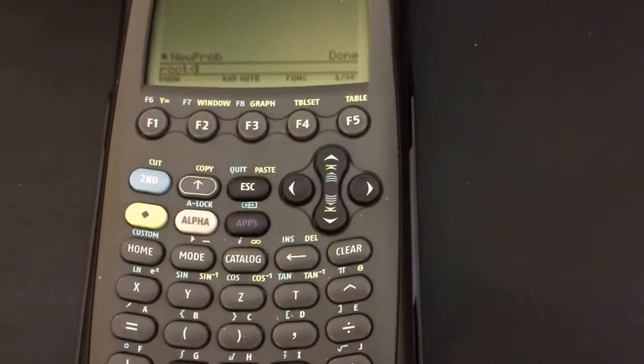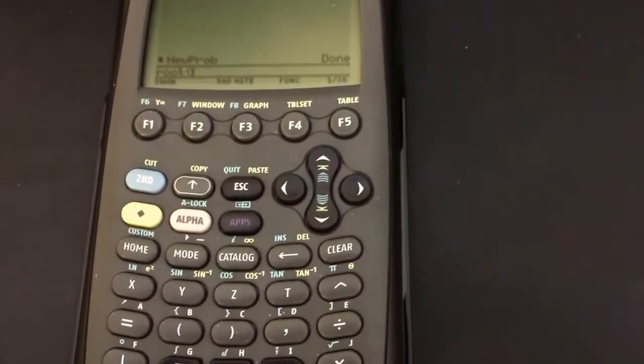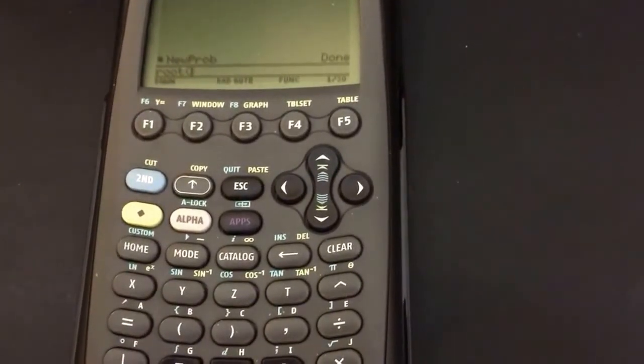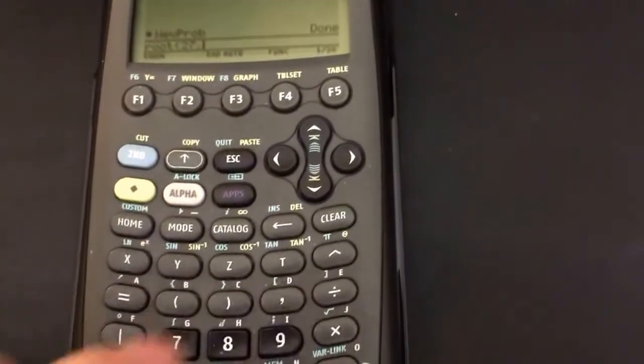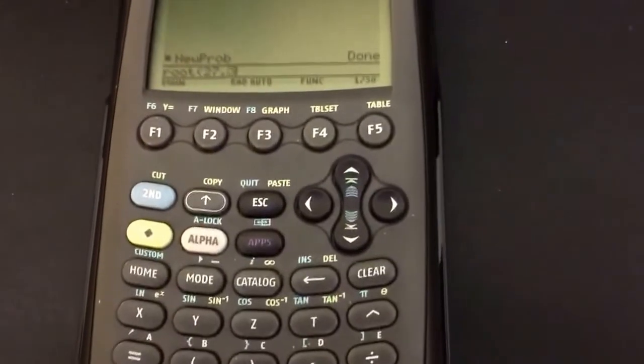So say we wanted to find the cube root of 27, which should be 3. You can start in with 27, comma, then 3.